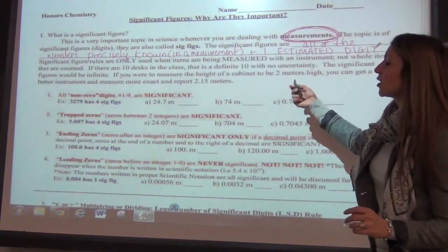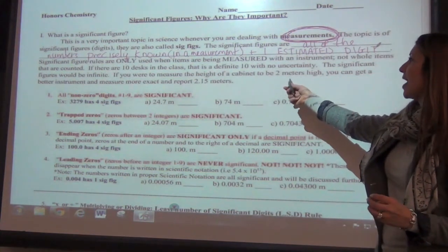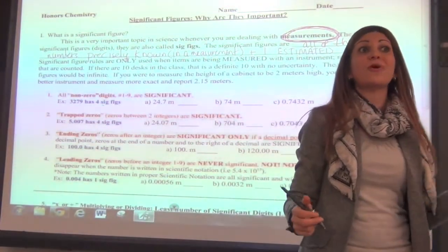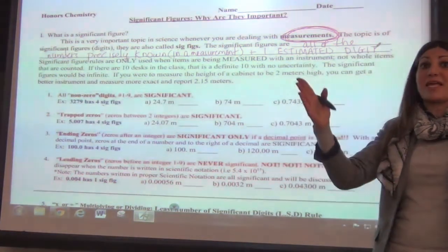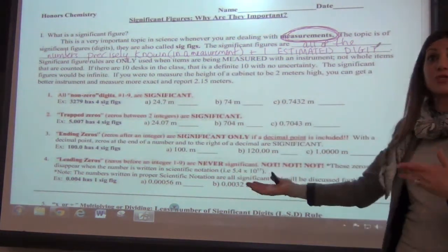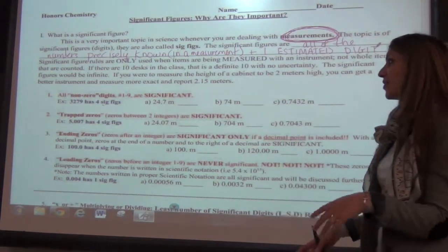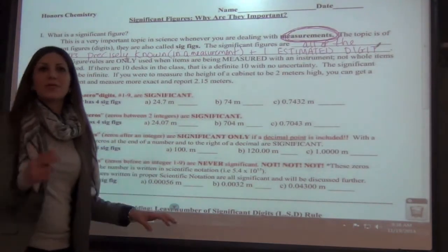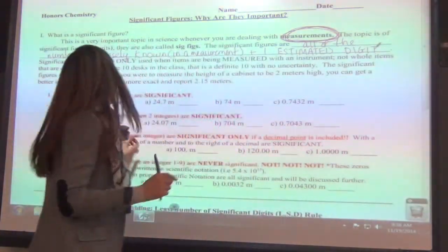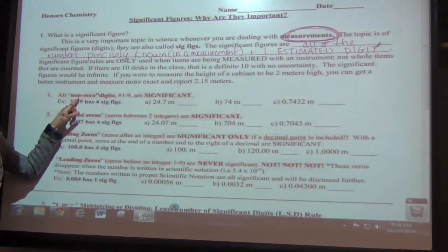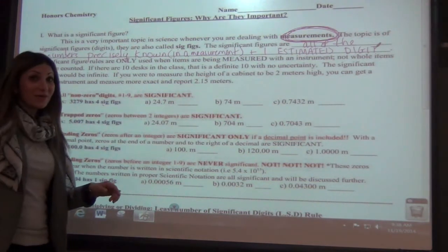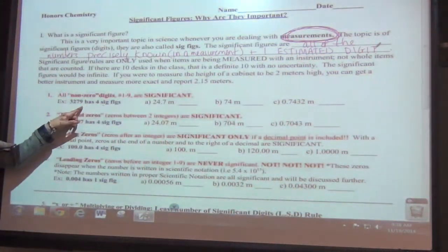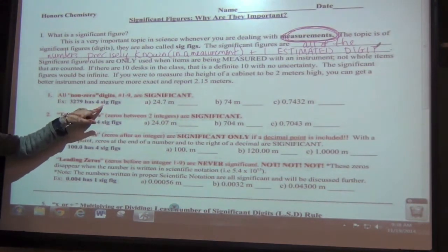So, significant figures are infinite if you're counting something, but if you're measuring the height of a cabinet to be 2 meters, you can get a better instrument and measure more exactly — maybe it's 2.15 meters. That way you don't make the mistake of having to cut off part of your wall or pay shipping fees. Let's talk sig figs. I have four rules listed here, but we're really going to minimize it down to two. The first rule: any non-zero number is significant. The non-zero numbers are one through nine. So 3279 has four sig figs — every single number is significant.